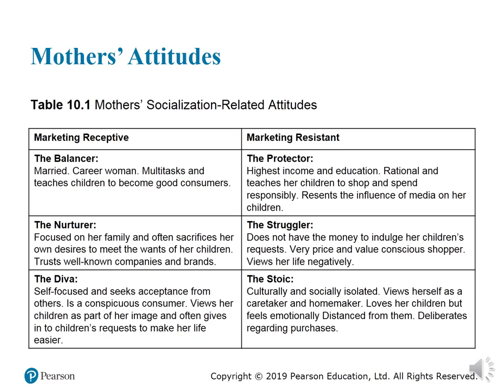The protector has the highest income and highest education. She is very rational, teaches her children to shop and spend responsibly, and resists the influence of media on her children. The struggler does not have money to indulge her children's requests, cannot fully satisfy her children, is a very price and value conscious shopper, and views her life negatively. The stoic is culturally and socially isolated.